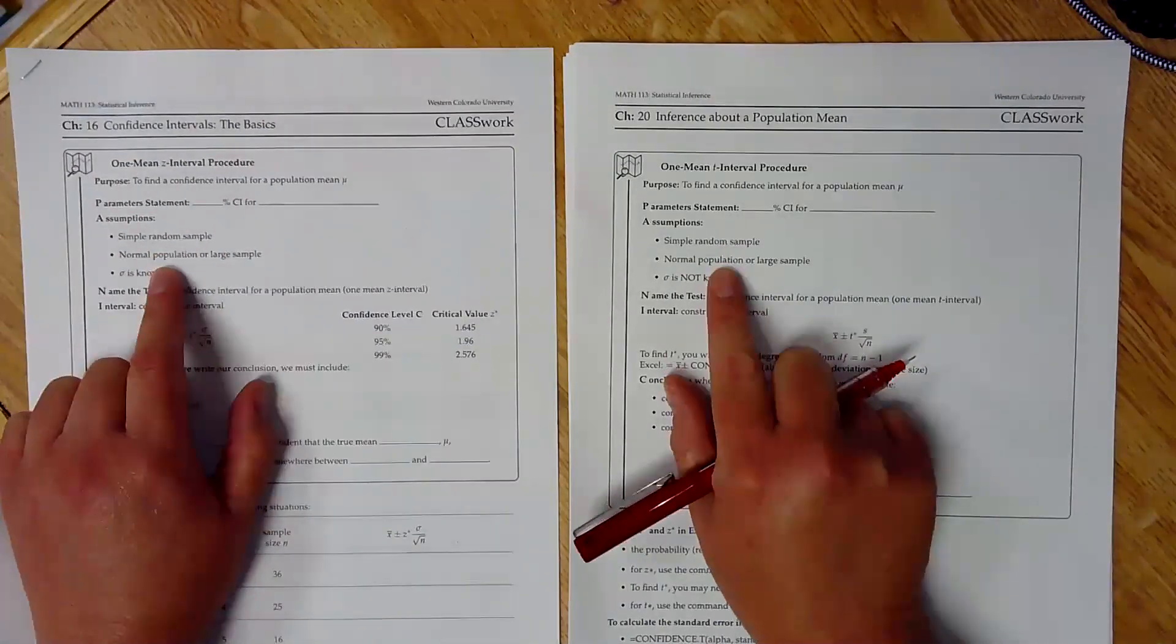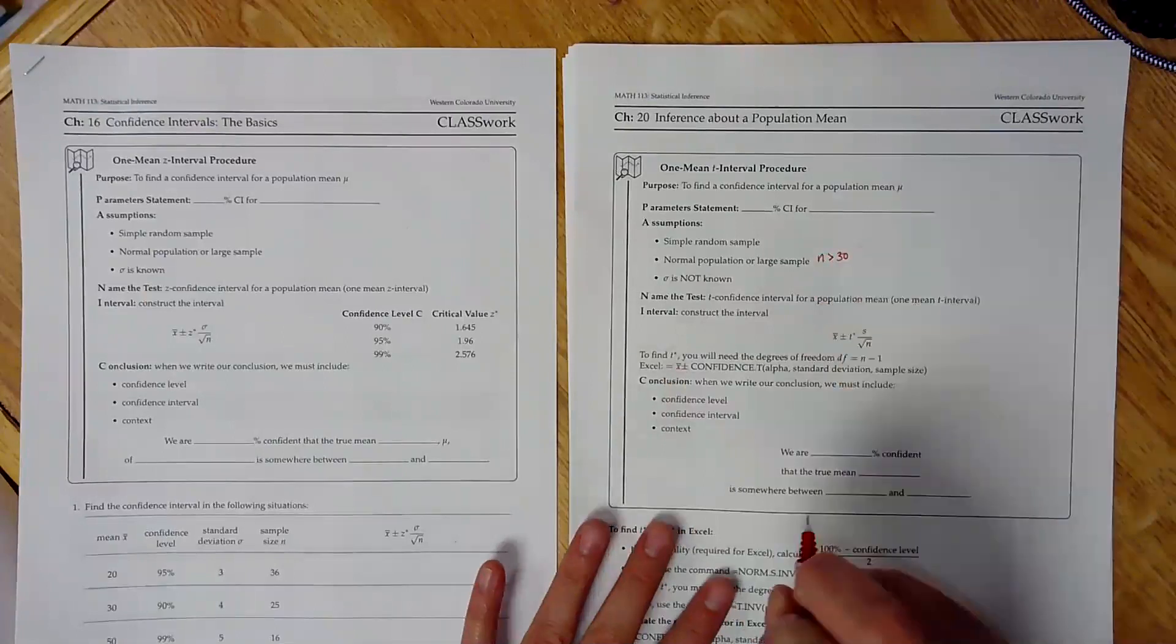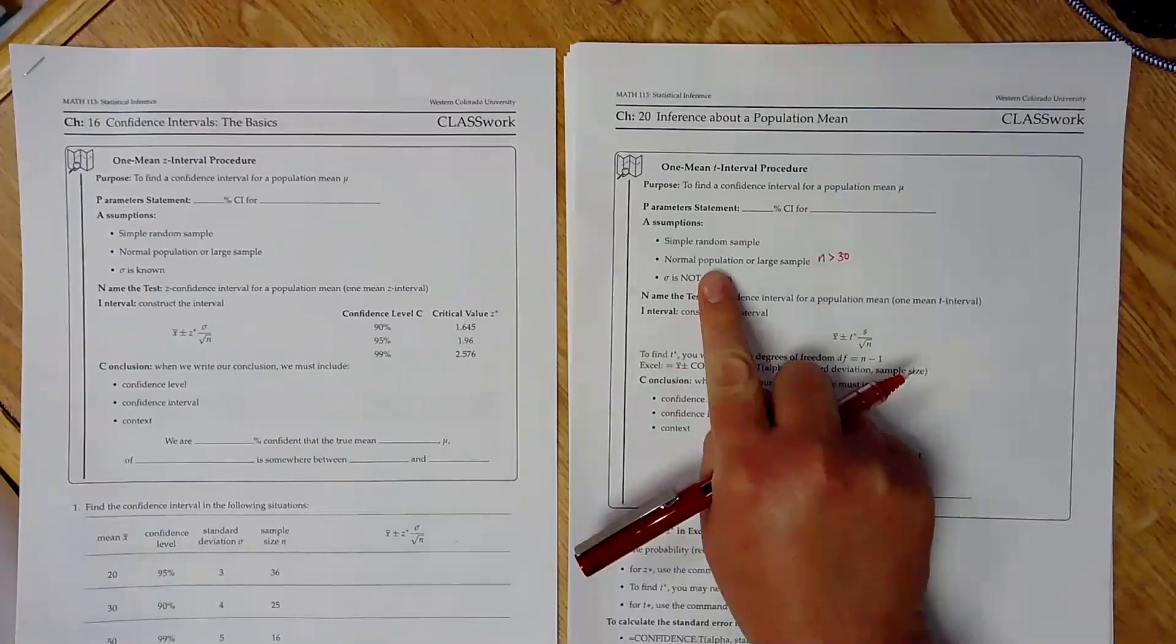And then you need to know that either your sample is large enough, meaning that n is greater than 30, or you have a normally distributed population. And you would know that because it's either stated in the problem or you've made the normal probability plot.